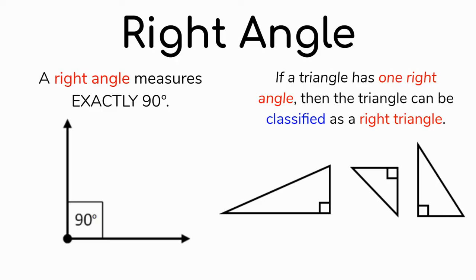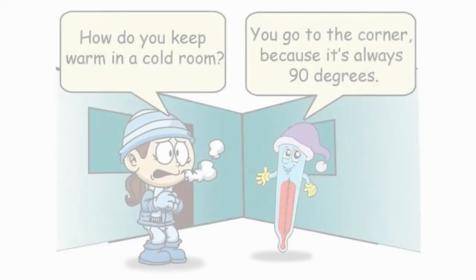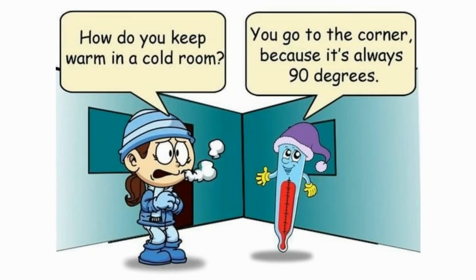And here is a right angle joke for you. How do you keep warm in a cold room? Just go to the corner, because it's always 90 degrees!